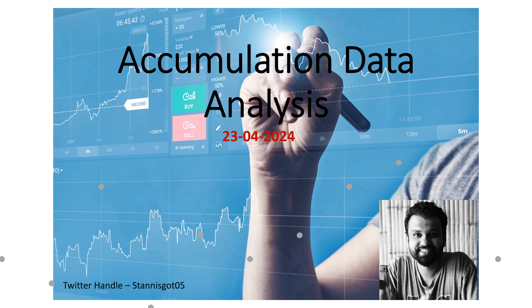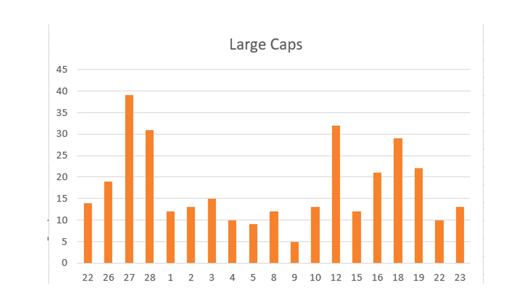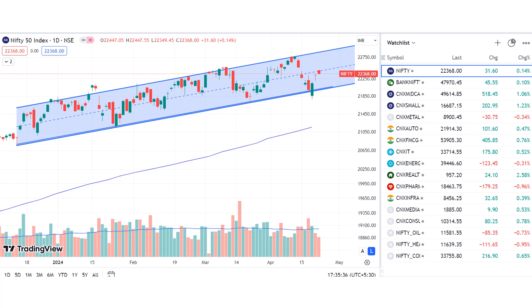Starting with the large cap accumulation — the Nifty analysis. The large caps saw a very small increase in accumulation compared to previous days, but that's decent enough because usually large caps at the bottom will have very high accumulation. Since we are somewhere in the middle of the parallel channel right now, decent or okay-ish accumulation is typical, while strong accumulation happened at the bottom. So we are slowly moving higher.